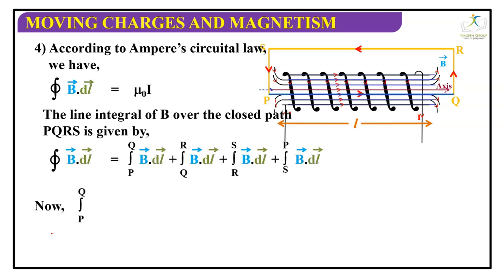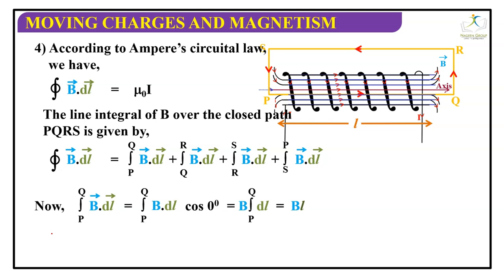The integration of vector B dot vector dL is made up of particular steps. Here, this is a closed path, and I'll open this closed path into open parts: segments P to Q, Q to R, R to S, and S to P.